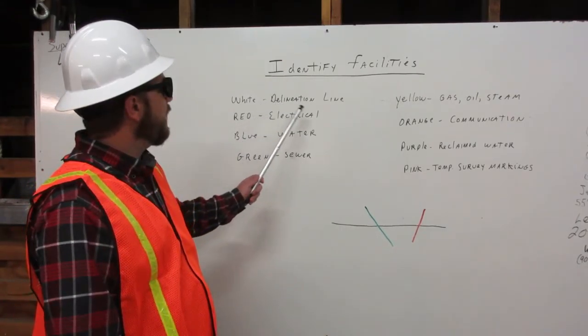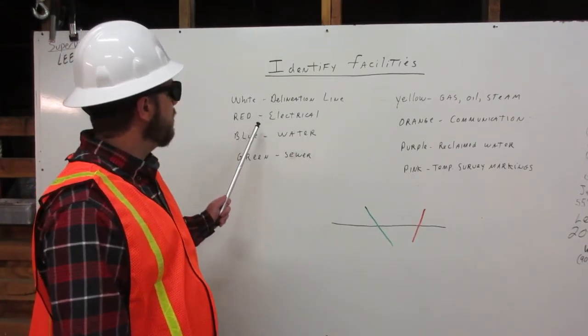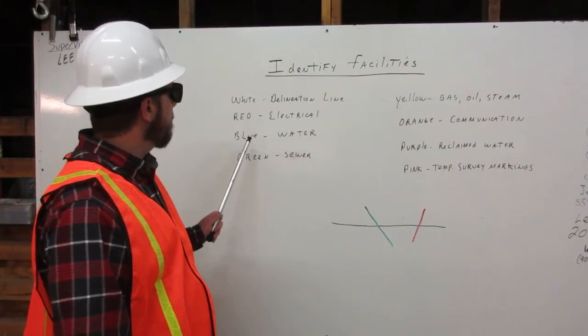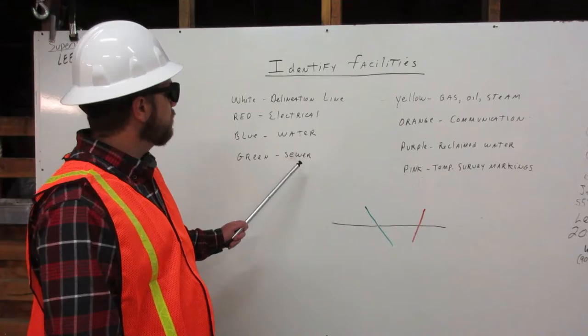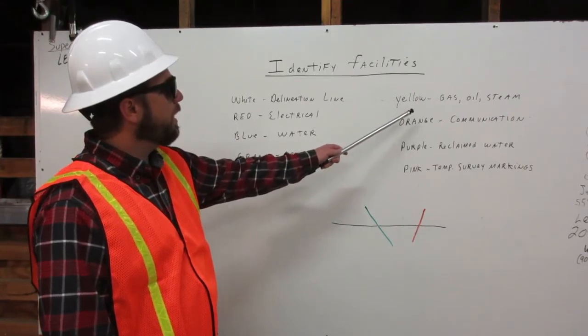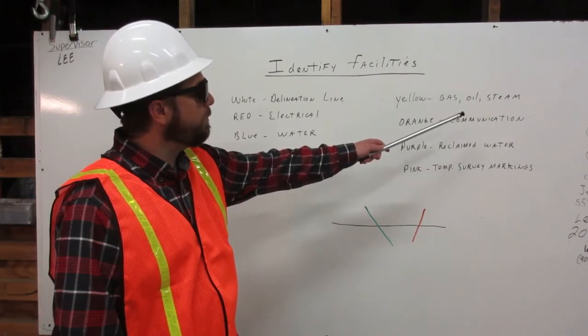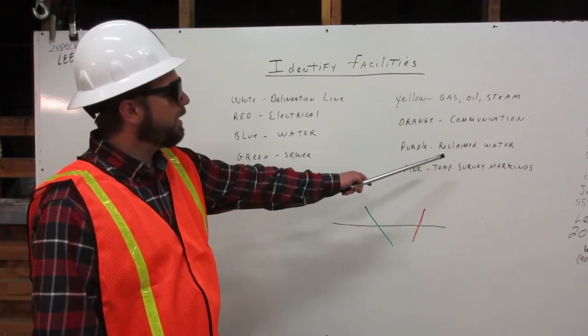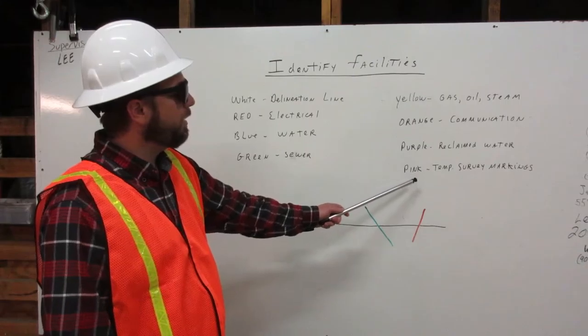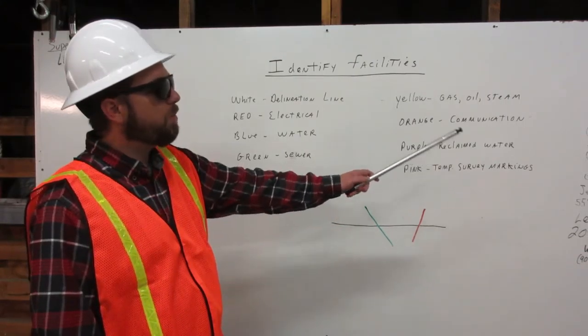White: delineation line. Red: electrical. Blue: water. Green: sewer. Yellow: gas, oil, steam. Orange: communication. Purple: reclaimed water. Pink: temp survey markings.